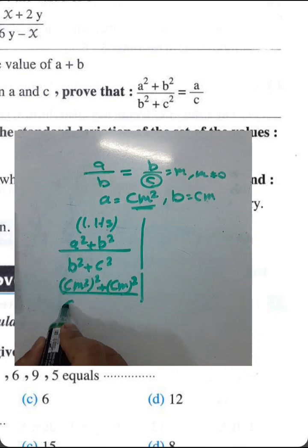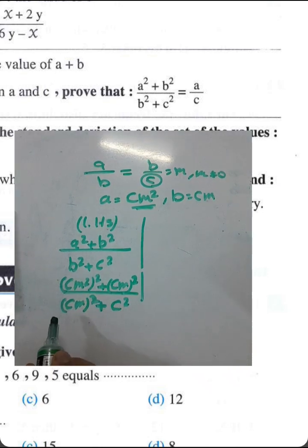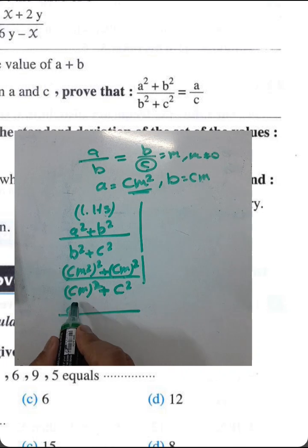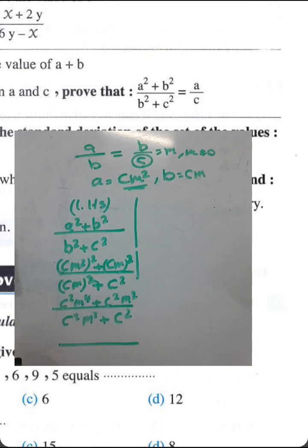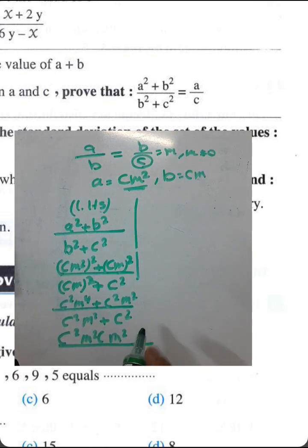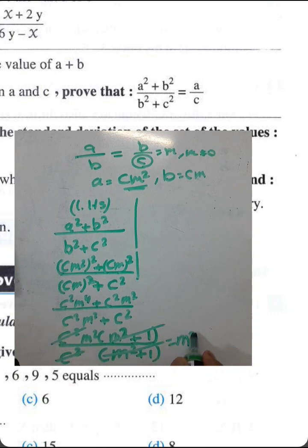Expanding: (c²m⁴ plus c²m²) over (c²m² plus c²). Factoring out c²: c²(m⁴ plus m²) over c²(m² plus 1). Canceling c² by c² and simplifying m²(m² plus 1) over (m² plus 1), we cancel (m² plus 1), giving m².